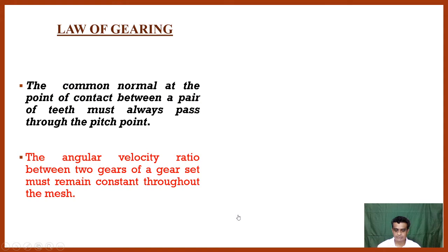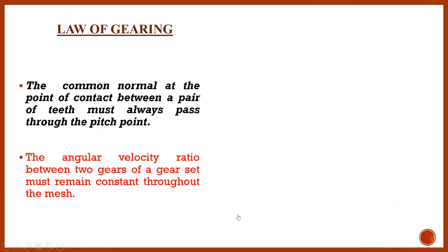The common normal at the point of contact between a pair of teeth must always pass through the pitch point, that pitch point which is the constant point. And the angular velocity ratio between the two gears of a gear set must remain constant throughout the mesh.